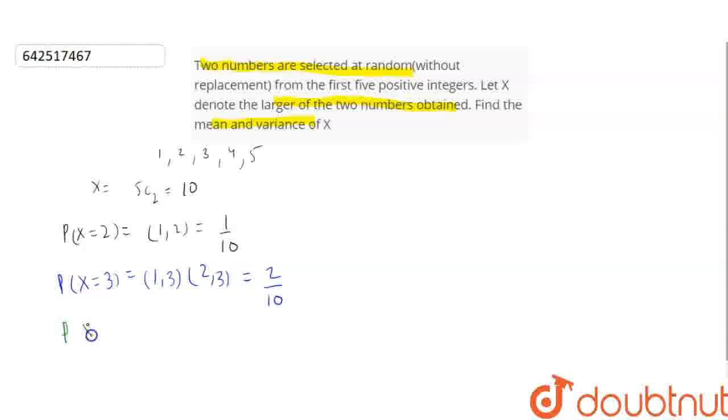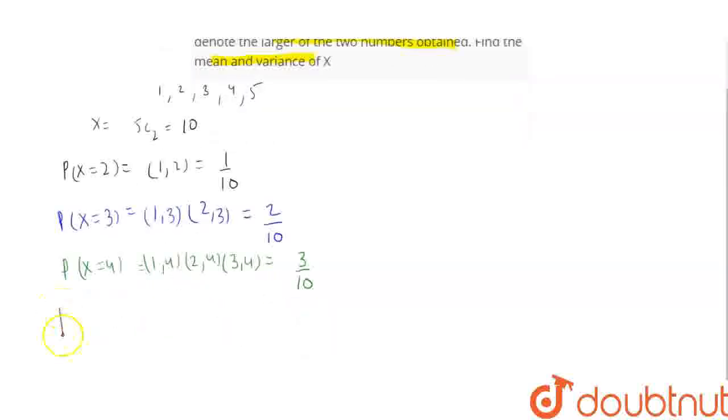Then, probability of X equals 4 will be 1,4 or 2,4 or 3,4. That gives us 3 by 10. And probability of X equals 5 will give us 1,5.